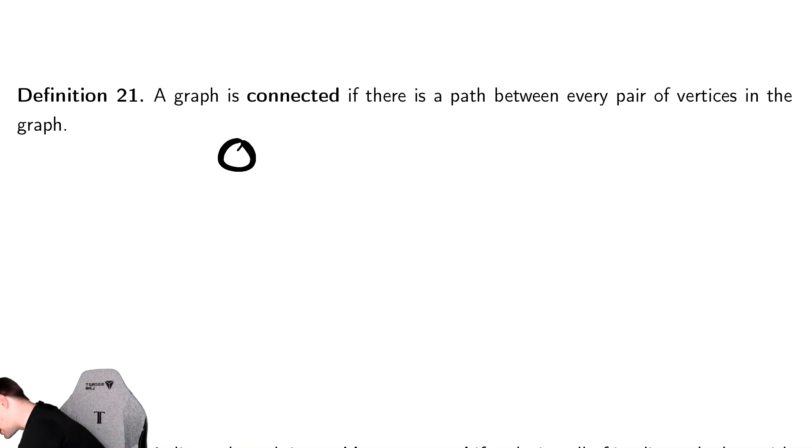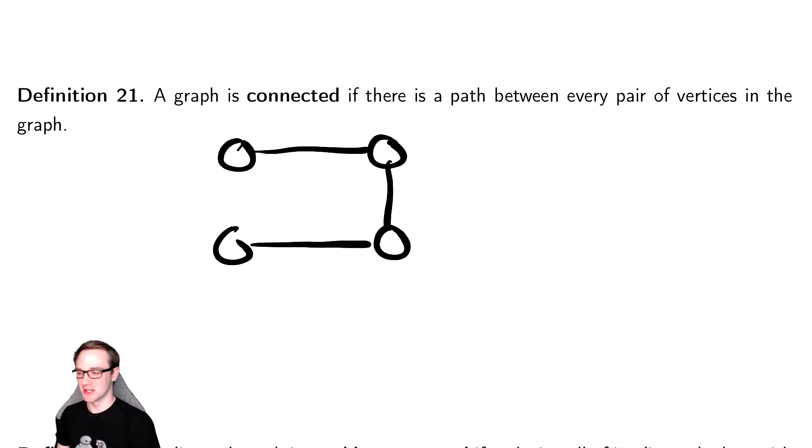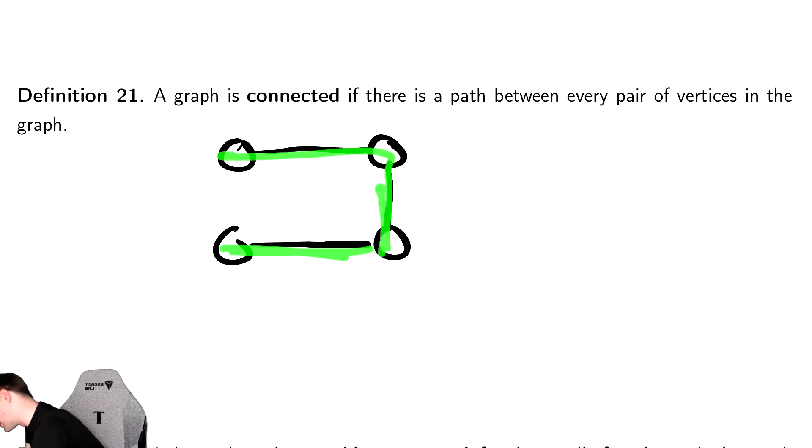So here's an example of a connected graph. I can go from every vertex to every other vertex. I can go from the top left to all the other ones, from the top right to all the other ones, from the bottom right to all the other ones, from the bottom left to all the other ones.